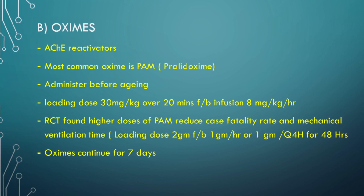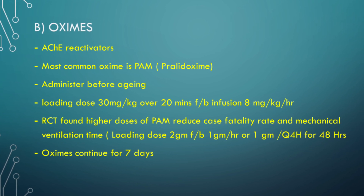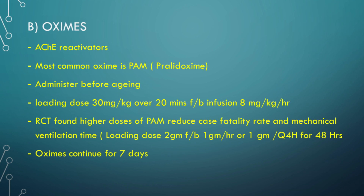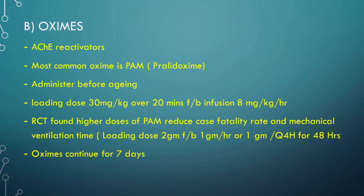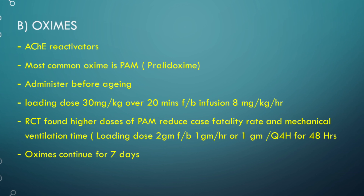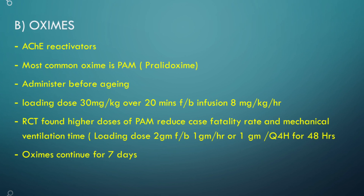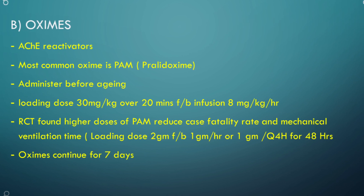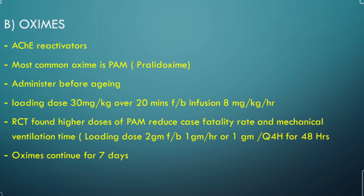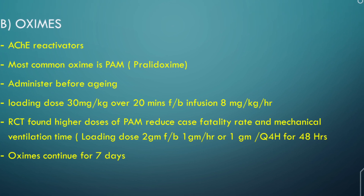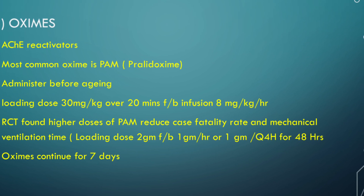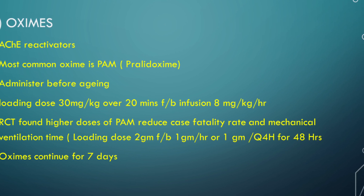Oxime therapy — oximes are acetylcholinesterase reactivators that cleave the organophosphate-acetylcholinesterase complex and free the enzyme. The most commonly used oxime is pralidoxime. All oximes should be given before the aging process occurs. The loading dose of pralidoxime is 30 mg/kg over 20 minutes, followed by an infusion dose of 8 mg/kg body weight per hour. For an average 70 kg patient, 2 grams should be the loading dose followed by 500 mg per hour as infusion. Recently, randomized clinical trials found that higher doses of pralidoxime reduce the case fatality rate, reduce mechanical ventilation time, and decrease chances of pneumonia.